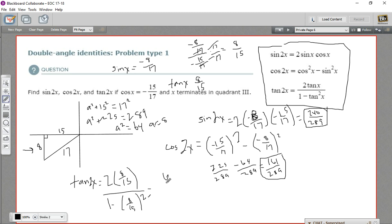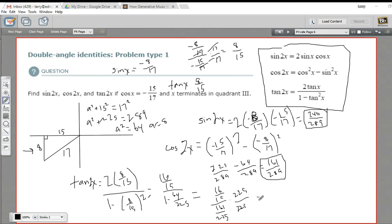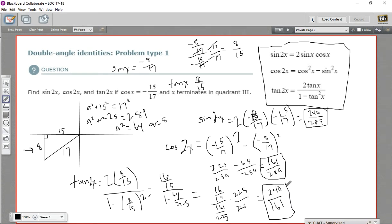All right. So on the top, multiply that 2 in. We'll have 16 15ths. And on the bottom, we're going to have 1 minus 64 225ths. So that is 161. So we've got 16 15ths over 161 225ths. And let's see, I guess we need to multiply the top and the bottom by 225, which is 15 squared. So that means on the top, we have 15 times 16, and that is 240. And on the bottom, we have 161. And I think that's where we can leave it. So that's our tangent of 2x. So that is how to use the double angle identities.